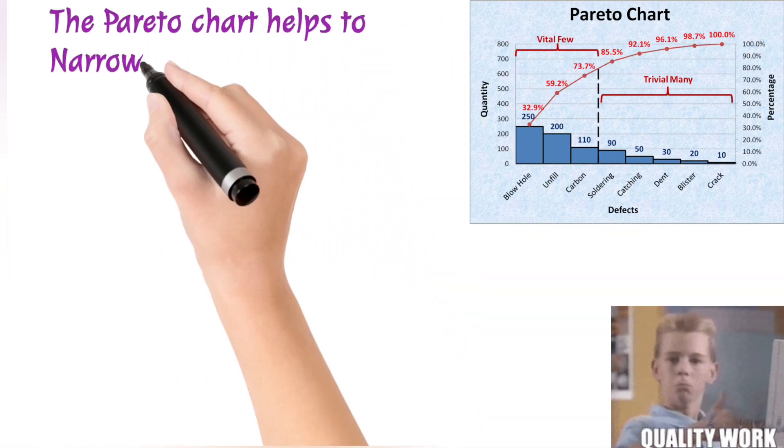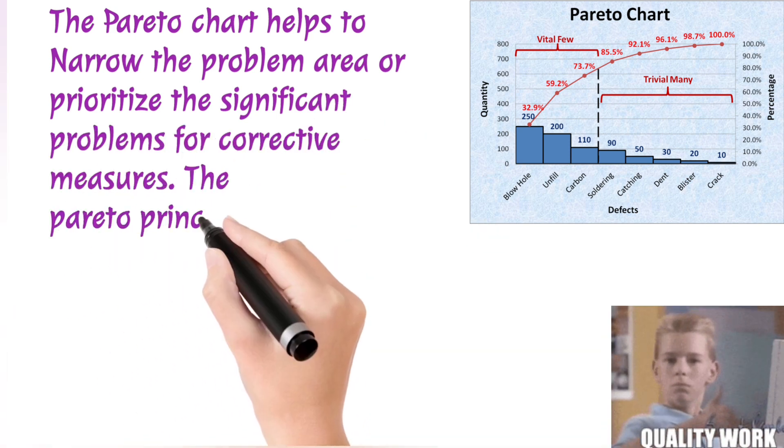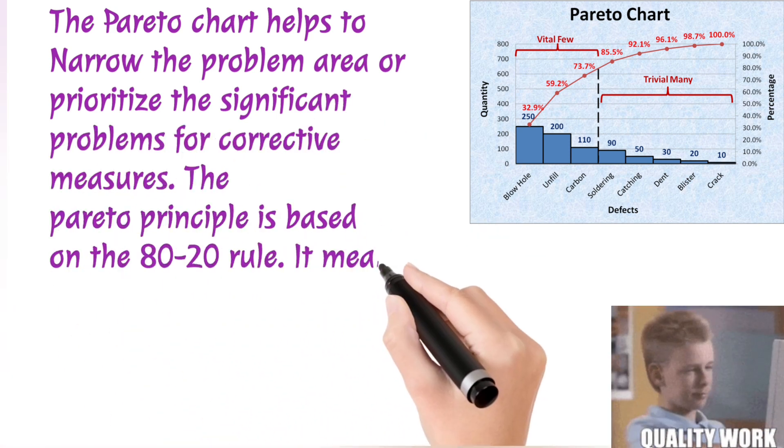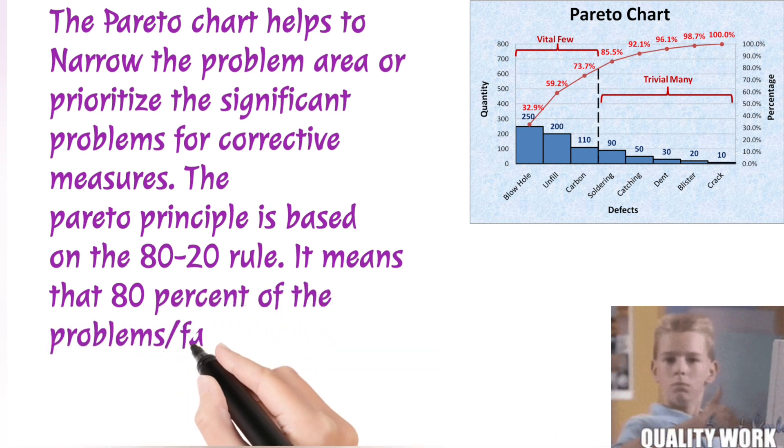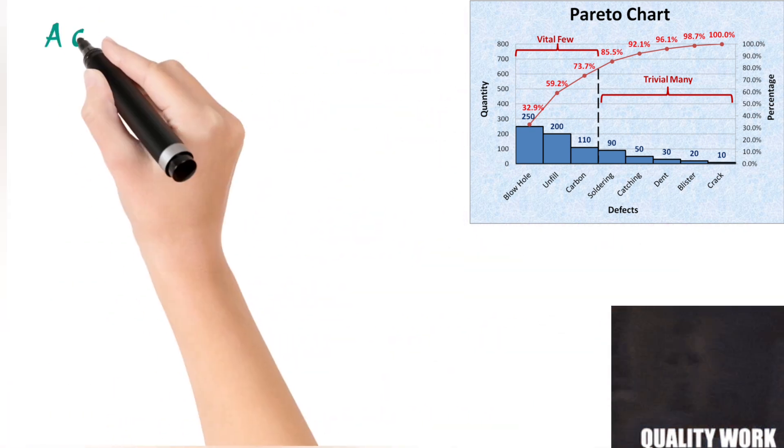The Pareto Chart helps to narrow the problem area or prioritize the significant problems for corrective measures. The Pareto Principle is based on the 80-20 rule. It means that 80% of the problems or failures are caused by 20% of the few major causes or factors.